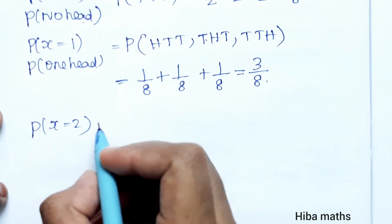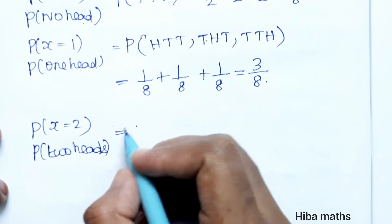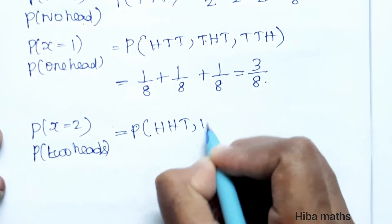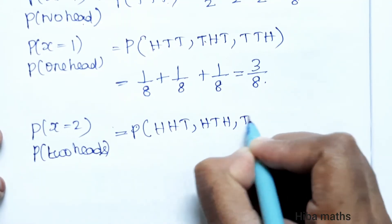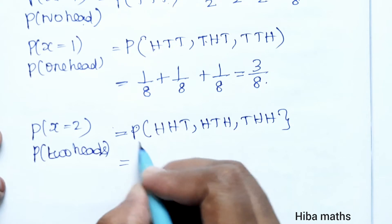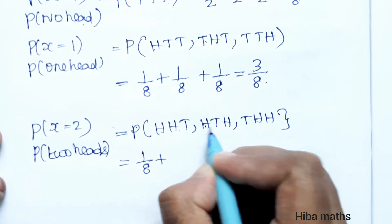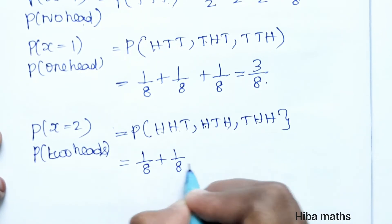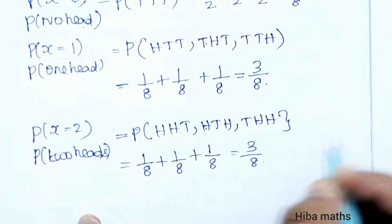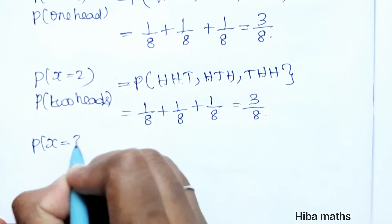P(X = 2): exactly two heads. The outcomes are HHT, HTH, and THH. Each has probability 1/8, so P(X = 2) = 1/8 + 1/8 + 1/8 = 3/8.